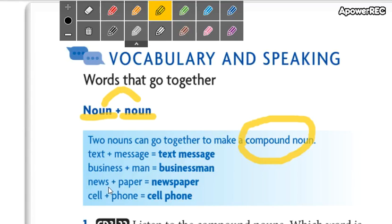Another example: newspaper. So, a compound noun. Newspaper. Cell. Another. Phone. So, this is cell phone.